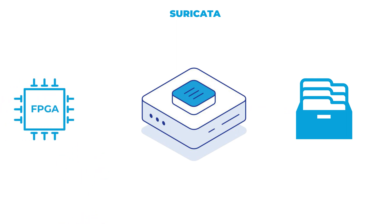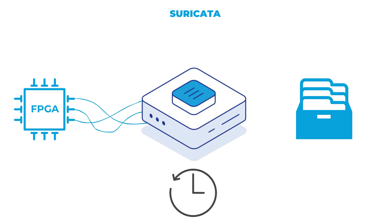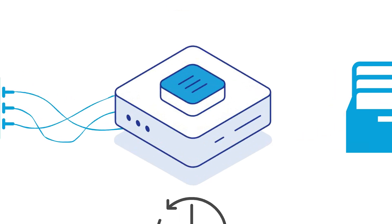Telesoft's FPGA enhancements allow the CERN to include a 2.5 second back-in-time buffer, a feature which allows packets prior to the alert to be retrieved for a more granular level of analysis.